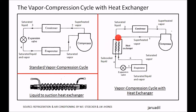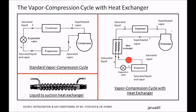The refrigerant from the condenser, upon exiting, will first go to the heat exchanger before going to the expansion valve. Unlike in the basic cycle, where it goes directly to the expansion valve. And the refrigerant from the evaporator, before going to the compressor, will first pass through the heat exchanger.